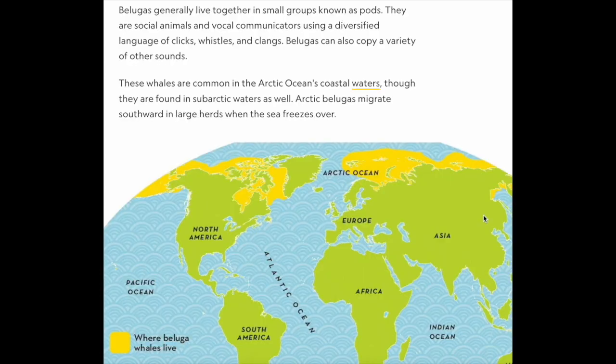Belugas generally live together in small groups known as pods. They are social animals and vocal communicators using a diversified language of clicks, whistles, and clangs. Belugas can also copy a variety of other sounds. These whales are common in the Arctic Ocean's coastal waters, though they are found in sub-Arctic waters as well. Arctic belugas migrate southward in large herds when the sea freezes over.